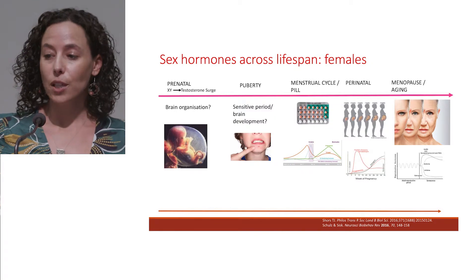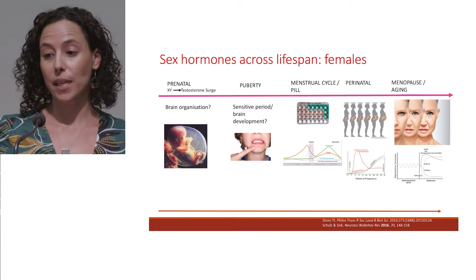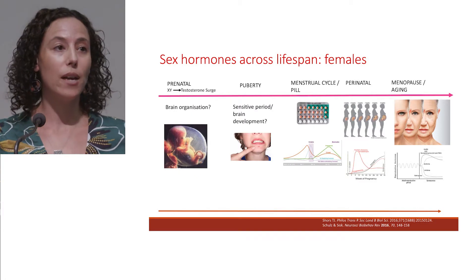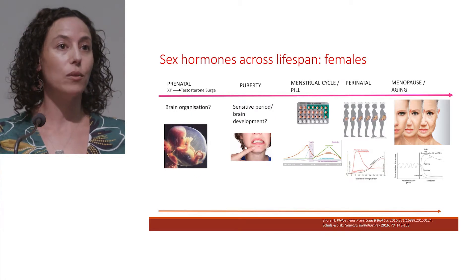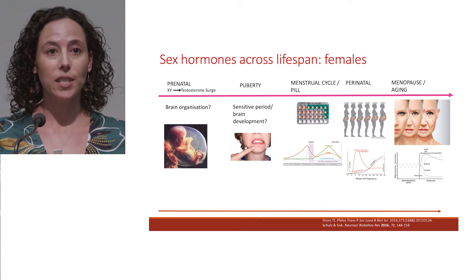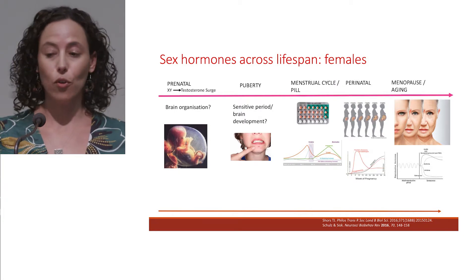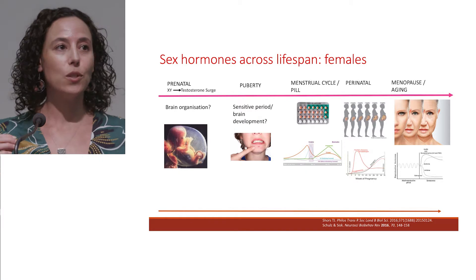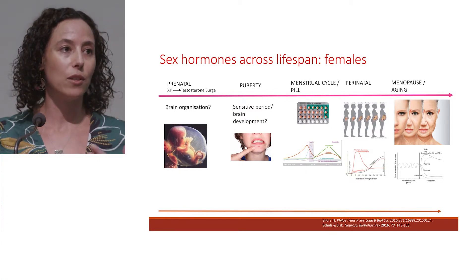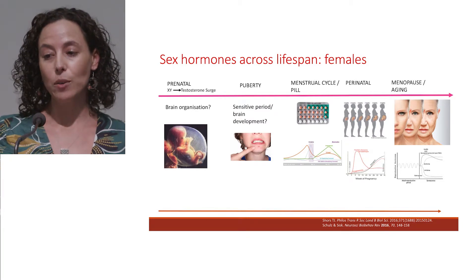The influence of sex hormones across a female's lifespan actually begins in utero. At a prenatal stage, males' and females' brain development diverges. Males have a testosterone surge during weeks 8 to 24 of gestation and this is thought to contribute to differences in the way males' and females' brains develop.